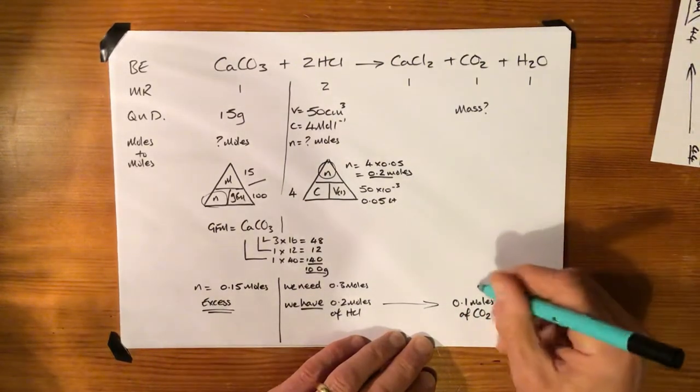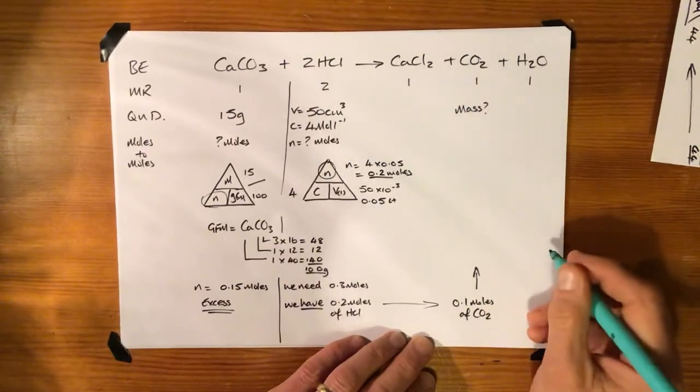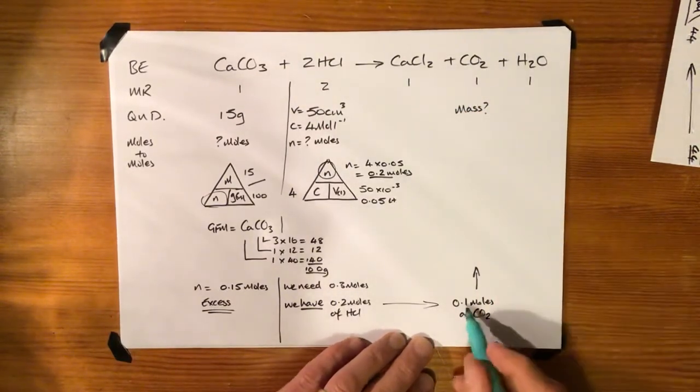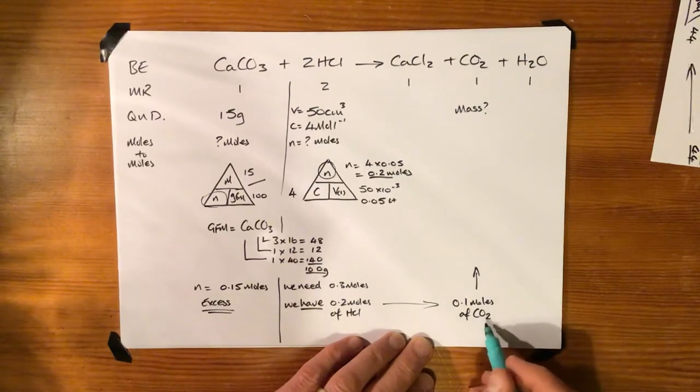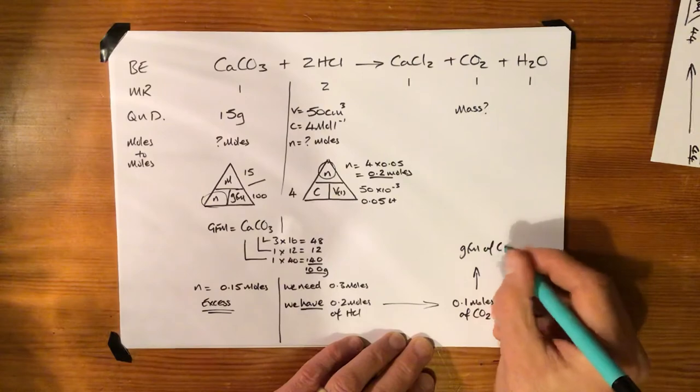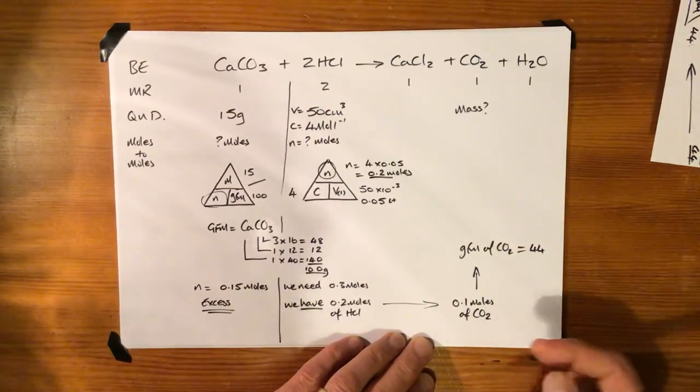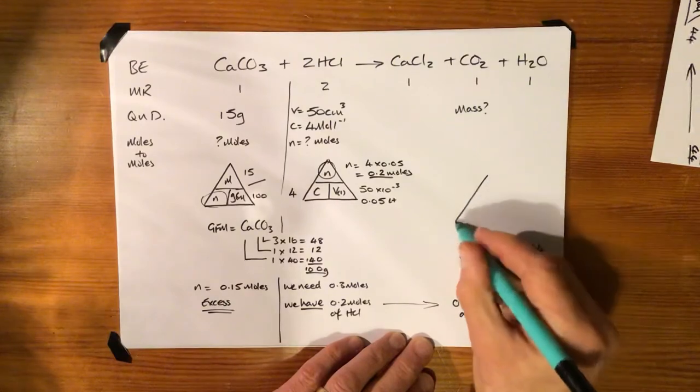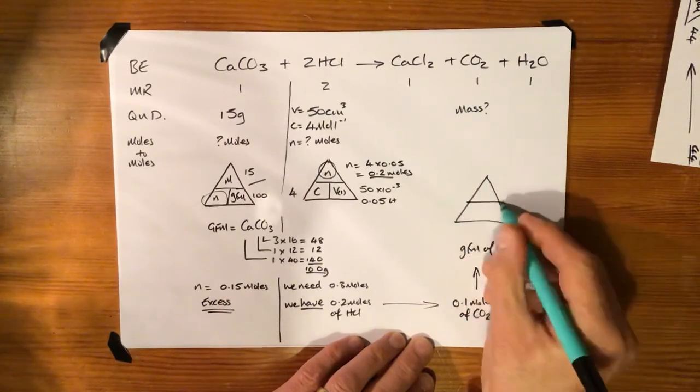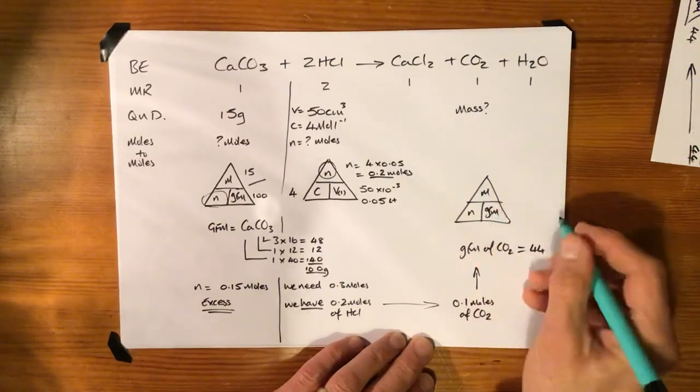Now we need to answer the question though. The question was mass, so we need to say right, how many grams is 0.1 moles of carbon dioxide? Well, we know that the gram formula mass of CO2 is 44 because we worked it out earlier. So what we need to do is go back to another triangle. N equals mass over gram formula mass.